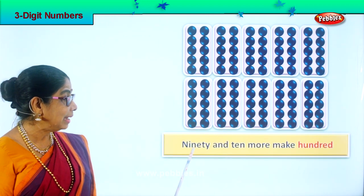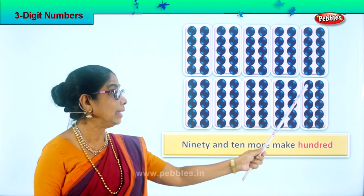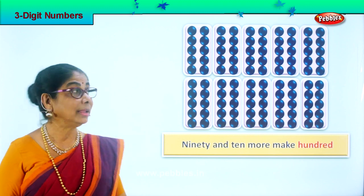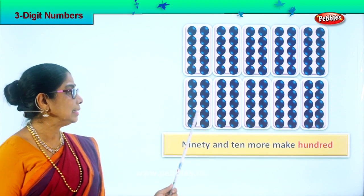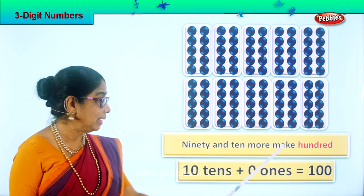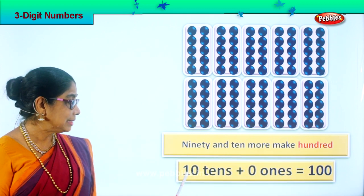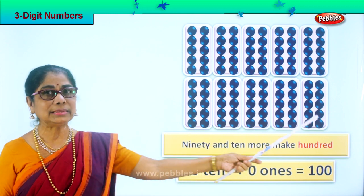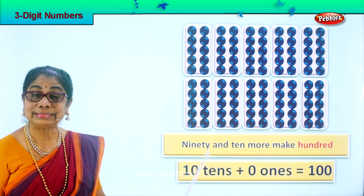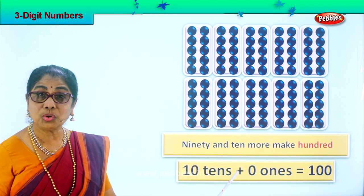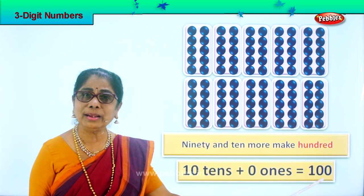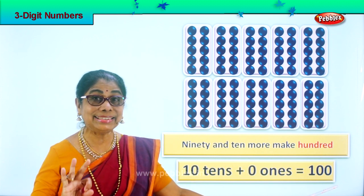Ninety and ten more make one hundred. Ten, twenty, thirty, forty, fifty, sixty, seventy, eighty, ninety — and ten more. So ninety and ten more make one hundred. Ten tens plus zero ones equals one hundred. How many tens are there? Ten. Ten tens equals one hundred. How do you write one hundred? One, zero, zero — one hundred. That is a three digit number.